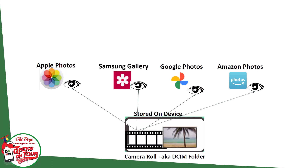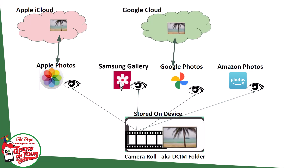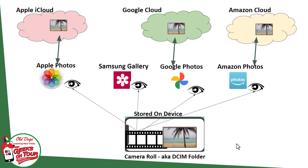Now let's put the cloud back into the picture. With Apple Photos, if you use the recommended settings, that photo will get uploaded to Apple iCloud. On the Samsung there is no automatic cloud connected to Samsung Gallery. But Google Photos, if you turn it on, will upload that photo to the Google cloud. And the same thing with the Amazon Photos app — if you set it up it will automatically upload to the Amazon cloud.